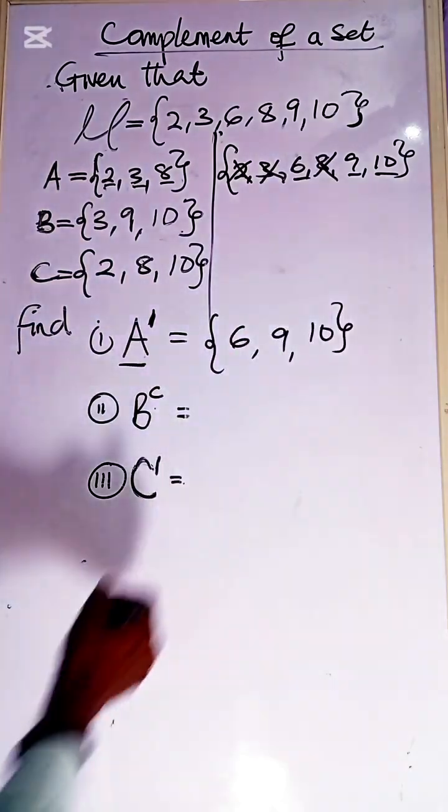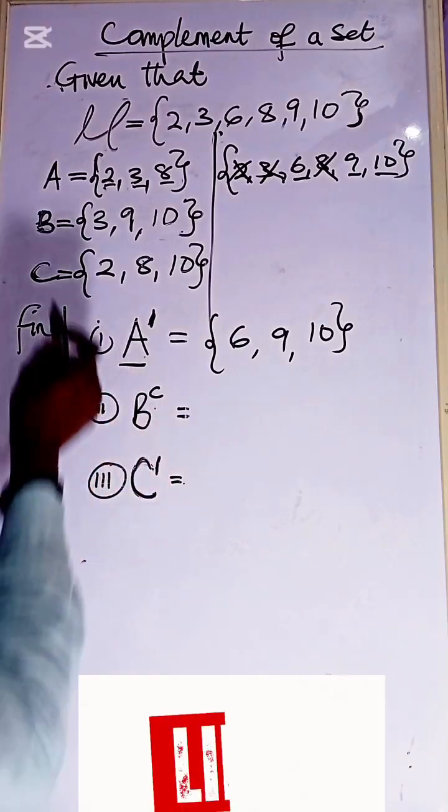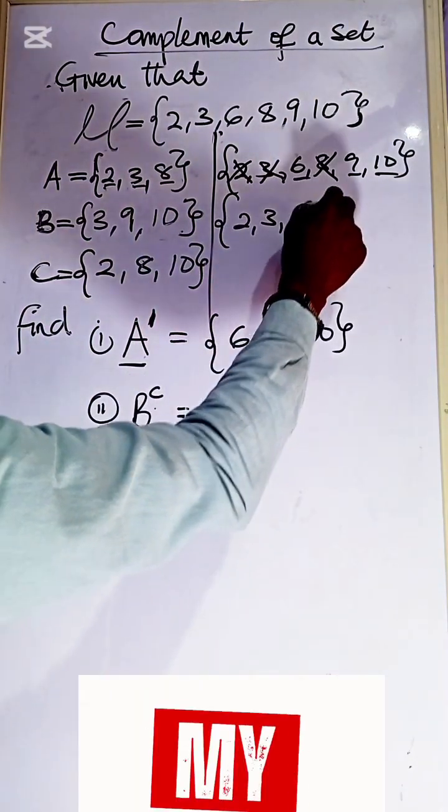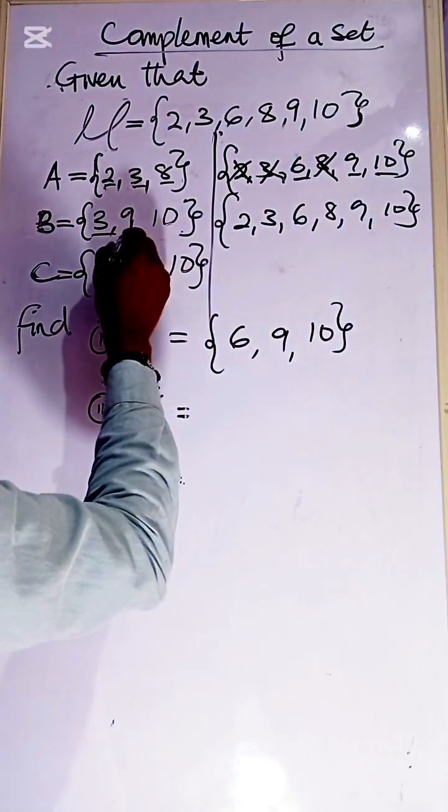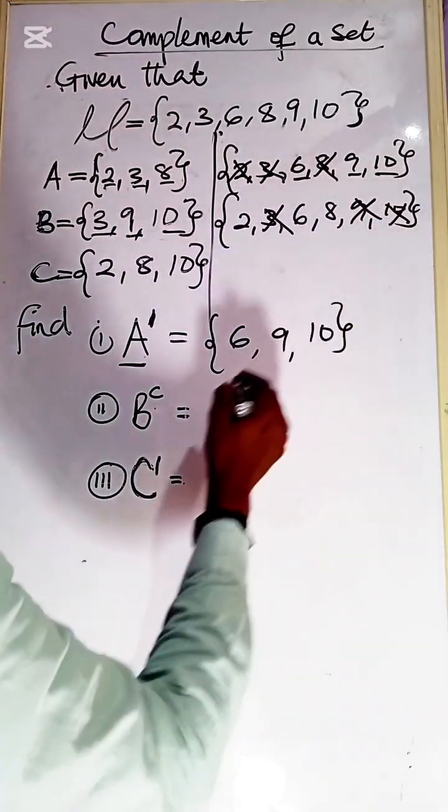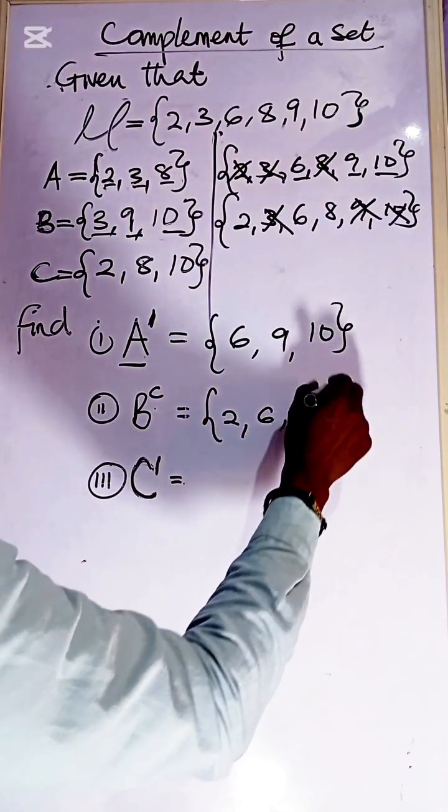What about our B complement or B prime? Let us remove this from the universal set. So let's remove 3, 9, and 10. So the leftover set is 2, 6, and 8.